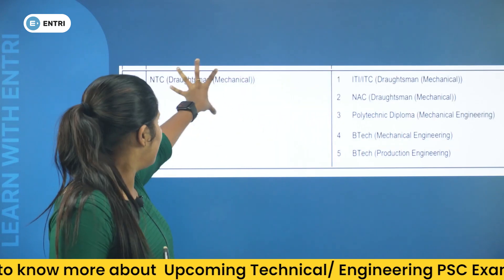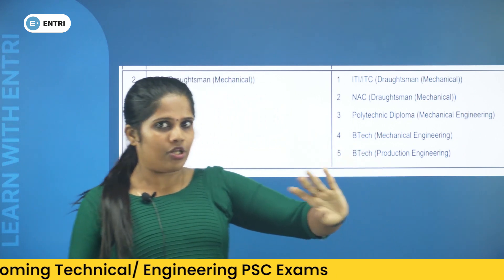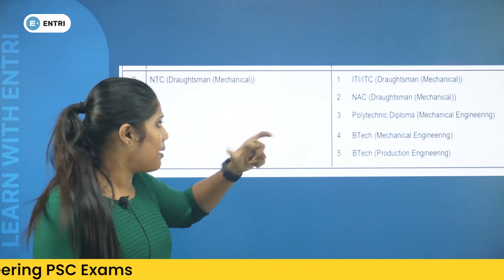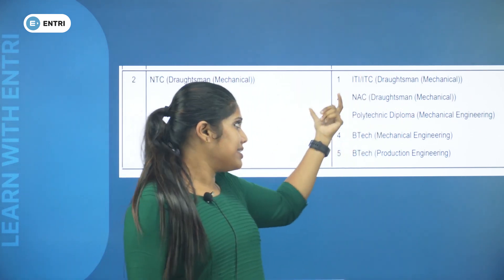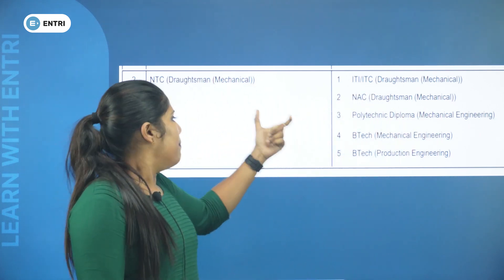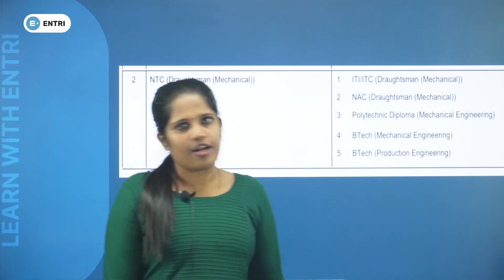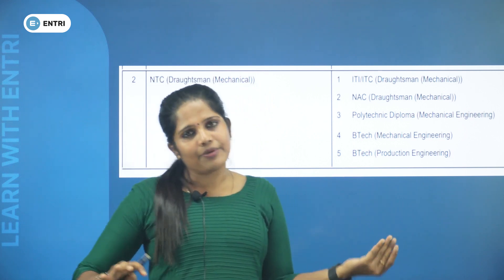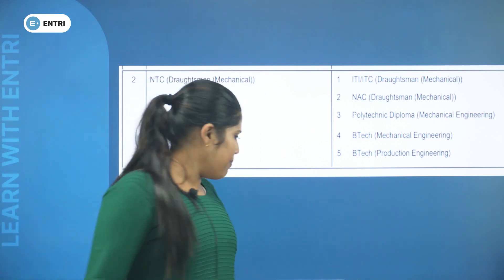NTC Draftsmen Mechanical for Water Authority civilian mechanical. Equivalent qualifications include: NTC Draftsmen Mechanical, KLPC Prescriber, IT or ITC Draftsmen Mechanical, NAC Draftsmen Mechanical, Polytechnic Diploma in Mechanical Engineering, B.Tech Mechanical Engineering, B.Tech Production Engineering. Also B.Tech and M.Tech Civil Engineering are applicable for this post.